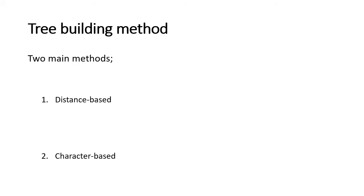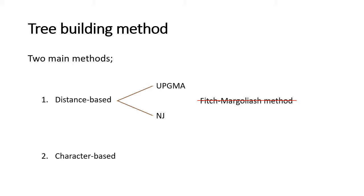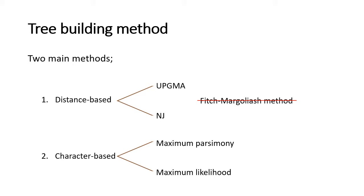For building a tree we have two main methods: one is known as the distance-based method and the other is the character-based method. In the distance-based method we talked about UPGMA and we also talked about the neighbor-joining method. Today we will discuss the character-based method, which includes two different methods: maximum parsimony and maximum likelihood. These are the most commonly and widely used methods, which is why we are discussing just these.